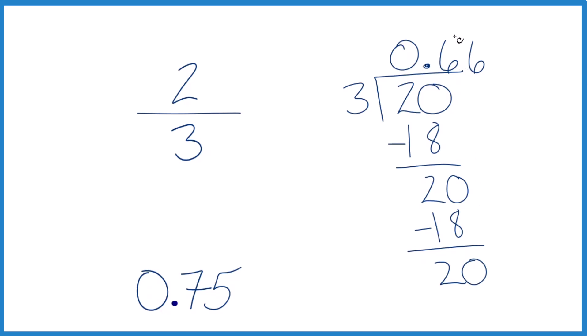So we could just call it 0.6 with a bar over it. So the fraction two-thirds equals the decimal 0.6666 repeating. You could call it 0.67 if you wanted to round.